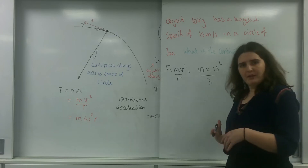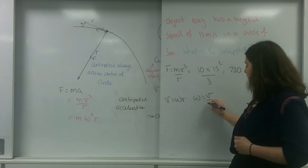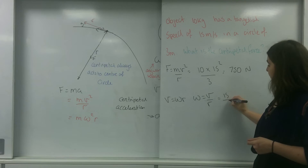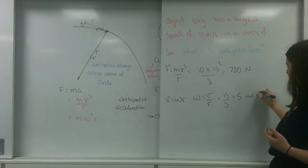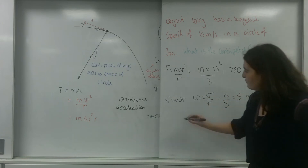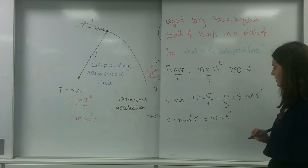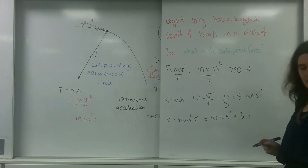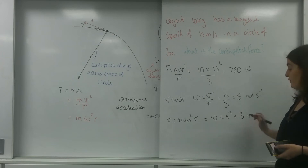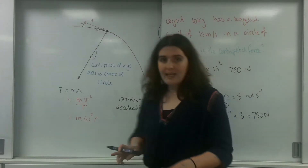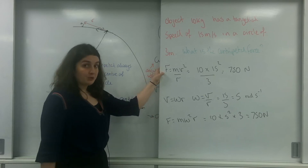Let's also use the other formula. I'm going to find what omega is. I know that V equals omega R, so omega equals V over R — that's 15 over 3, which is 5 radians per second. Then I'll stick that into F equals M omega squared R: 10 times 5 squared times 3. 5 squared is 25; 25 times 10 is 250; 250 times 3 is 750 Newtons. So whether I'm given information in omega or in tangential speed in metres per second, I can use either formula.